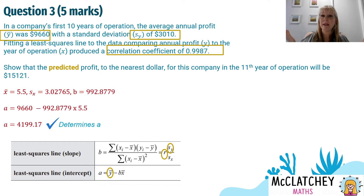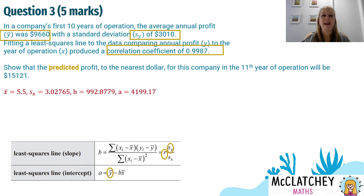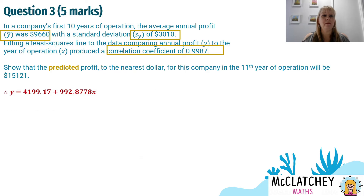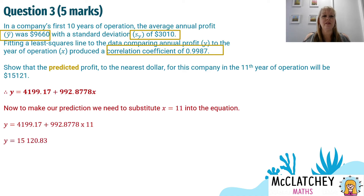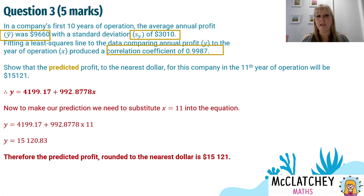Now we've got A and B, we can use our equation Y equals A plus BX and substitute in X equals 11 for the 11th year to work out the predicted profit. Note that it's multiply — a lot of people get confused and think it's plus 11, but it's not. Substituting in, we get $15,120.83. To the nearest dollar, that rounds to $15,121. We've proven and shown that the predicted profit to the nearest dollar is $15,121. That was our fifth mark.